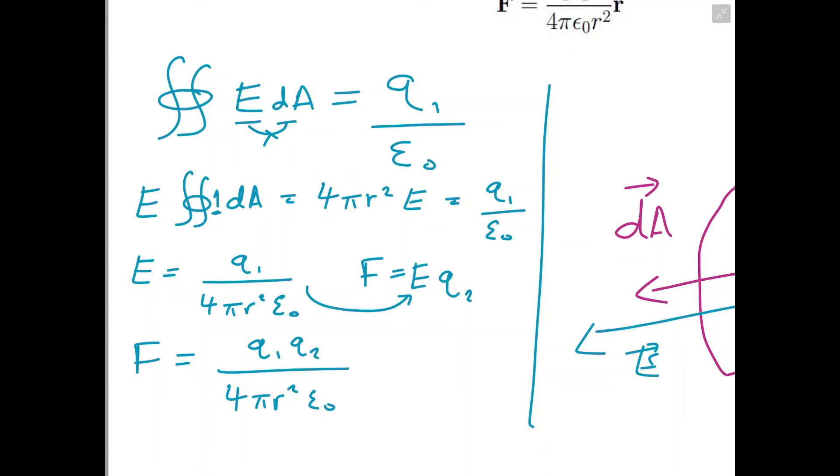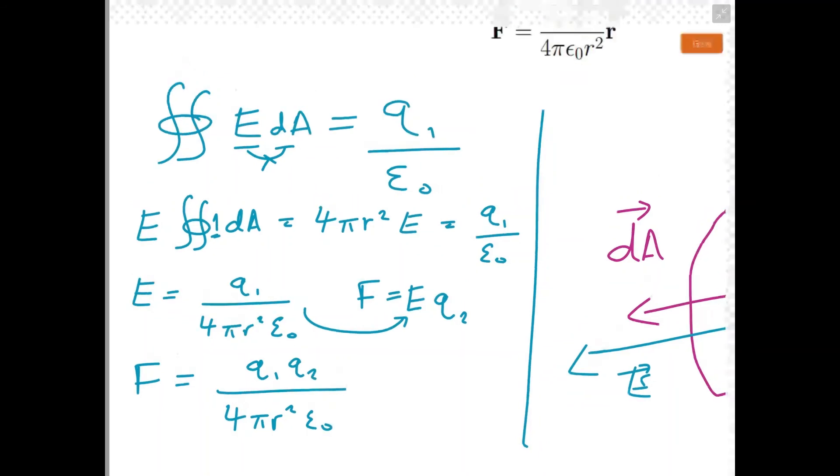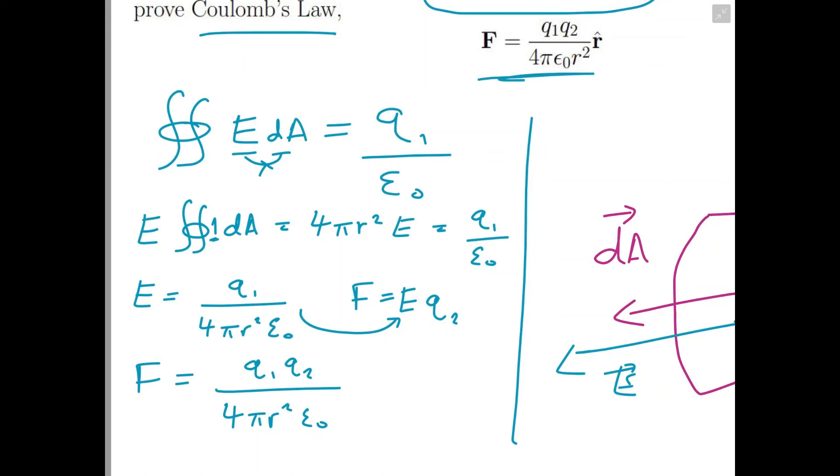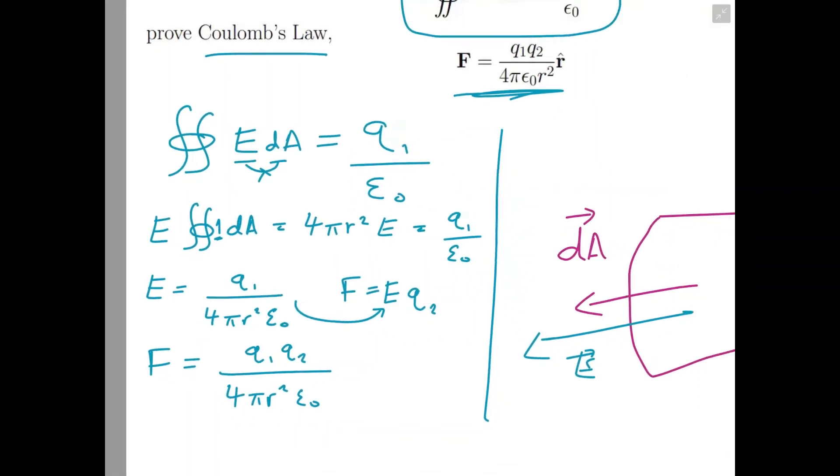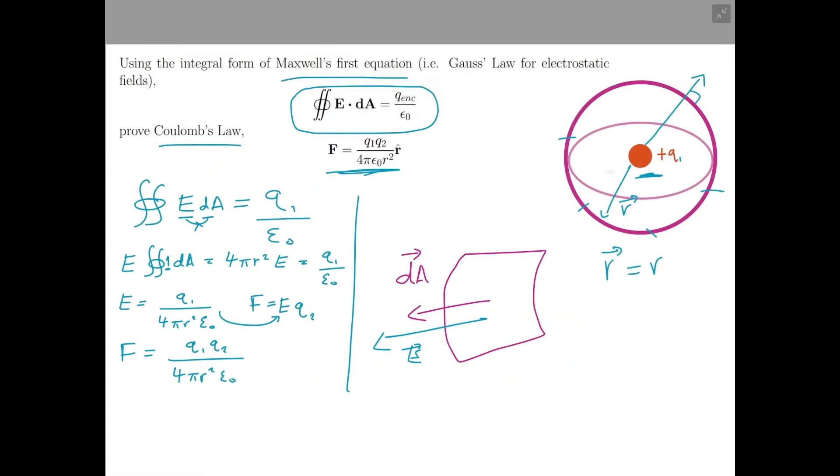So now this looks like Coulomb's Law, but remember Coulomb's Law is a vector equation, which we can tell from the characters in bold. To transform this into a vector equation, we know what the magnitude of F is—we just need its direction, and we can find it. Its direction is given by r.